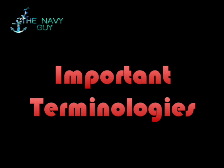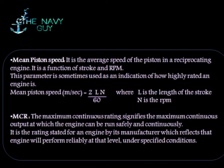Now we'll see some important terminologies that are very common and most important in the marine field. Mean piston speed is the average speed of the piston in a reciprocating engine. It is a function of stroke and RPM. This parameter is sometimes used as an indication of how highly rated an engine is. It is given by the formula 2LN/60, where L is the length of stroke and N is RPM. The unit is meters per second.